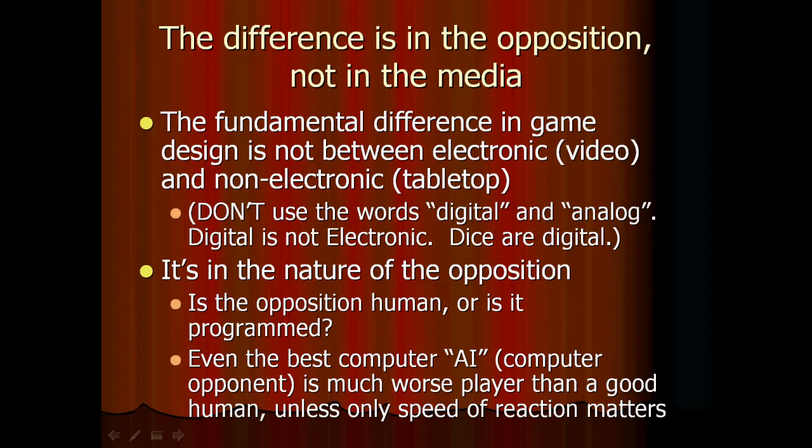Even the best computer opponent is much worse as a player than a good human player, unless the game is only about speed of reaction. And of course a tabletop game can have a programmed opponent; it's just that the programming can't be very complex because the players have to cope with it. So solitaire tabletop games and many cooperative tabletop games do have programmed opponents — the players are against the game, not against other players.